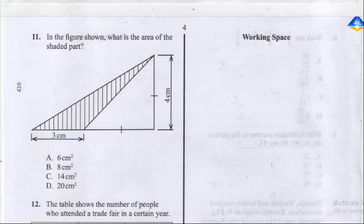Question 11 says: in the figure shown, what is the area of the shaded path? The first thing you need to know is that it's a triangle. Let's call the vertices A, B, and C. We'll calculate the area of triangle ABC. Notice this place is 4, here is 3.